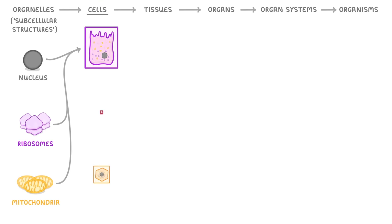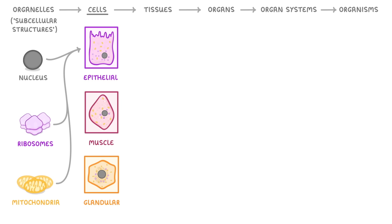Cells themselves come in all sorts of shapes and sizes, and contain different combinations and numbers of the organelles that we just mentioned. We call the different types of cells specialized cells, and they include things like epithelial cells, muscle cells, and different types of glandular cells.